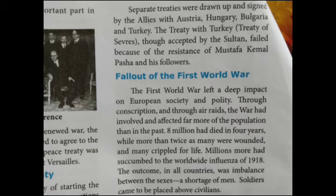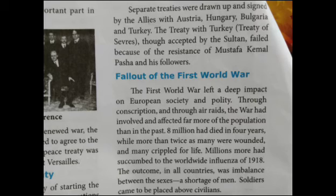Separate treaties were signed by the Allies with Austria, Hungary, Bulgaria, and Turkey. The Treaty of Sèvres was signed with Turkey by the Allies. The Sultan accepted the treaty, but it was a failure because it was opposed by Mustafa Kemal Pasha and his followers.